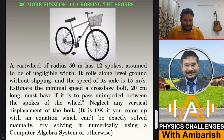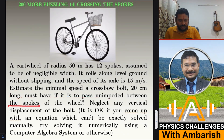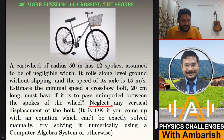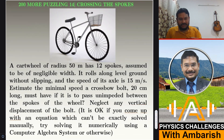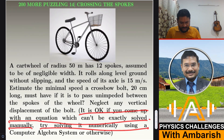Estimate the minimal speed the crossbow bolt, 20 centimeters long, must have if it is to pass unimpeded between the spokes of the wheel. Neglect any vertical displacement of the bolt, so you can ignore the effect of gravity on it while passing through. It is okay if you come up with an equation which can't be exactly solved manually — try solving it numerically using a computer algebra system or otherwise.